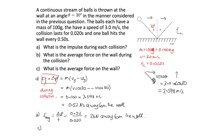Part C asks for the average force on the wall overall. Now the time used is the interval between balls hitting the wall, not just the collision duration. So F_average equals 0.52 divided by 0.50, which is 1.0 Newton away from the wall — much less than 26 N, as expected, because there are long periods when no ball is applying a force.